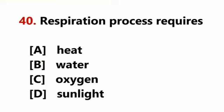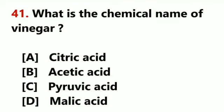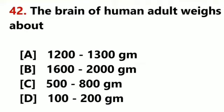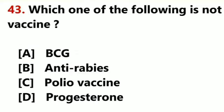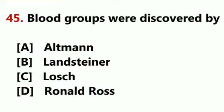Respiration process requires oxygen. What is the chemical name of vinegar? Acetic acid. The brain of a human adult weighs about 1200 to 1300 grams. Which one of the following is not a vaccine? Progesterone. The discoverer of penicillin was Alexander Fleming. Blood groups were discovered by Landsteiner.